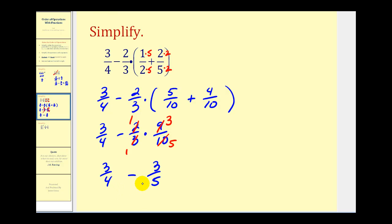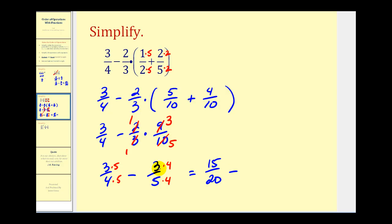Now we need to find a common denominator to compute three-fourths minus three-fifths. The LCD for four and five is twenty. Multiplying the first fraction by five over five and the second by four over four gives us fifteen twenty-fourths minus twelve-twentieths. The common denominator stays twenty, and fifteen minus twelve equals three, so all of this simplifies to three-twentieths.